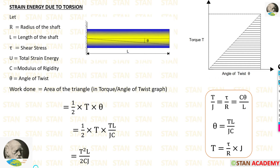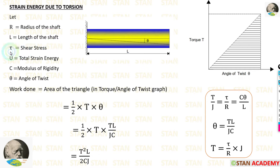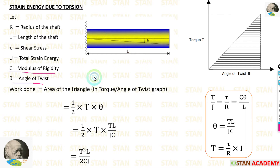Hello everyone. Today we are going to make an expression for the strain energy due to torsion. In this derivation, r is equal to radius of the shaft, l is length of the shaft, tau is the shear stress, u is equal to total strain energy, c is modulus of rigidity, and theta is equal to angle of the twist.